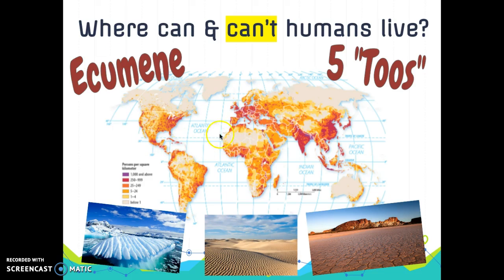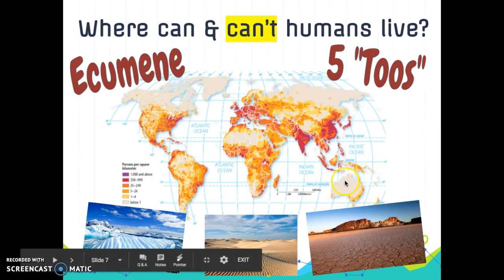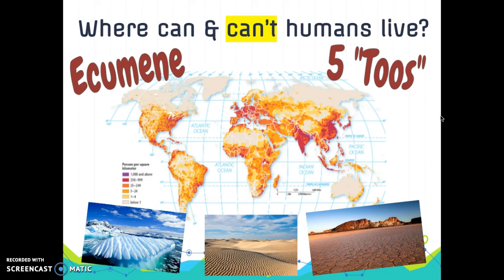Places that are too dry take up about 20 percent of the earth's surface area and are unsuitable for farming. Major examples include the Sahara Desert, the Gobi Desert, and the Australian Outback. Places that are too wet — like the Amazon rainforest — have very high precipitation where the combination of rain and heat rapidly depletes nutrients from the soil.